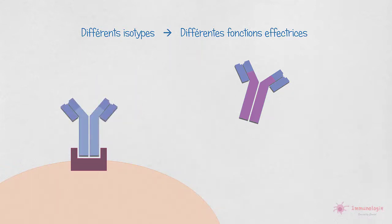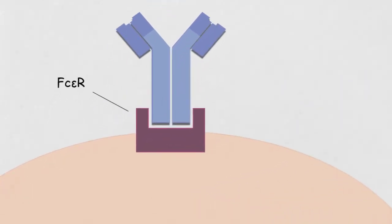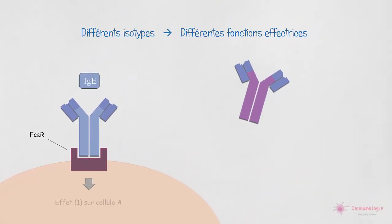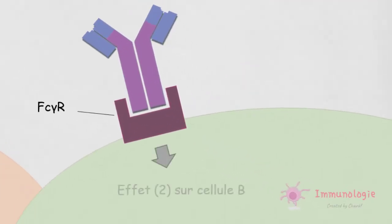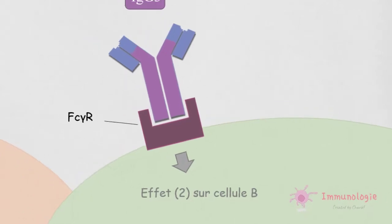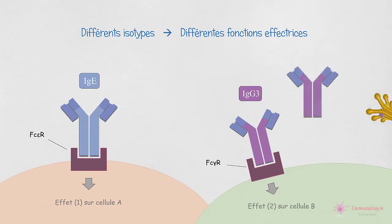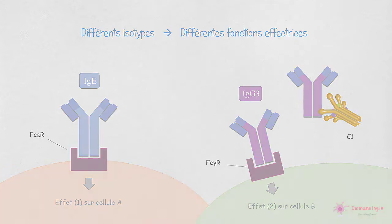Par exemple, l'IgE se lie à un récepteur spécifique appelé FC-epsilon-récepteur, exprimé à la surface de certaines cellules comme les mastocytes, et induit des effets différents de ceux induits lors de la liaison des IgG sur son récepteur FC-gamma-récepteur, qui est exprimé à la surface d'autres types de cellules comme les macrophages. De plus, les IgG3, mais pas les IgE, peuvent fixer le C1Q et activer la voie classique du complément.